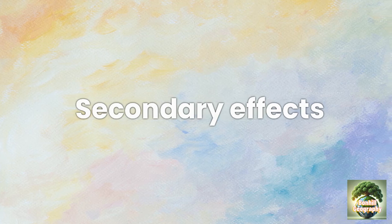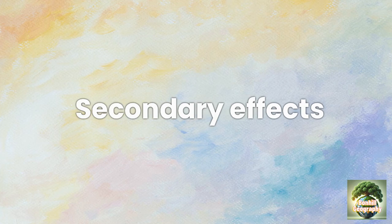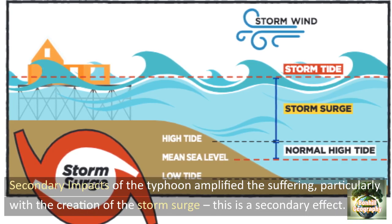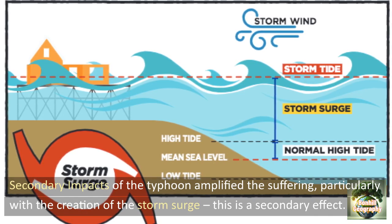Let's now look at the secondary effects. Remember, these are the knock-on effects that occur because of the primary effects. In the background behind us, we can see a really good example of the secondary effects of the storm surge, which amplified the suffering, particularly with the creation of this.